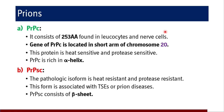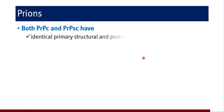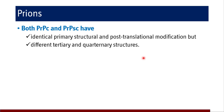Coming to PrPSc, the abnormal form — the pathologic isoform is heat resistant and protease resistant, compared to PrPC which was heat sensitive and protease sensitive. This form is associated with transmissible spongiform encephalopathies or prion diseases, and it consists mainly of beta-sheets. Whereas PrPC was rich in alpha-helix, PrPSc consists of beta-sheets. Both PrPC and PrPSc have identical primary structure and post-translational modifications, but they have different tertiary and quaternary structures — this differentiates PrPC and PrPSc.